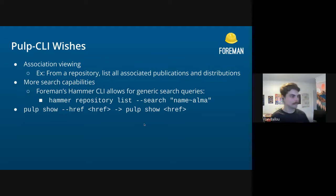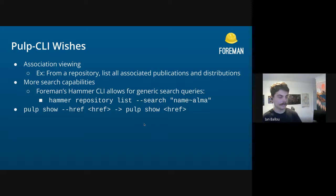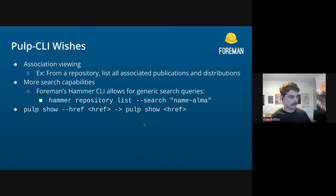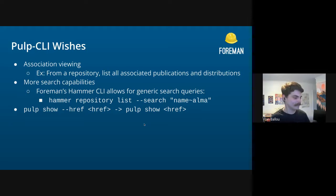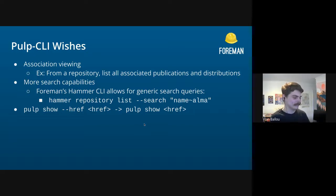Some wishes for Pulp CLI: viewing associations would be kind of nice — the connections between publications and distributions. We have some of that, but if you could even list it from a repository or repository version that would be neat. More searching capabilities would be cool — for example in our Hammer CLI for Foreman you can search for anything that looks like 'Alma', so having that capability in Pulp CLI could help us find things quicker. And Samir brought this up: we do a lot of 'pulp show --href' — it would be interesting if we could just do 'pulp show href' — ultimate laziness, but we wonder why the '--href' has to be there.